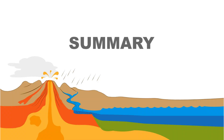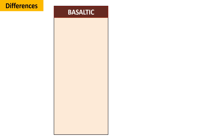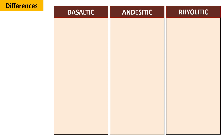Let us sum up. The three types of magma are basaltic, andesitic, and rhyolitic magmas. Viscosity: The viscosity of basaltic magma is low. Andesitic magma has intermediate viscosity, while rhyolitic magma exhibits high viscosity.